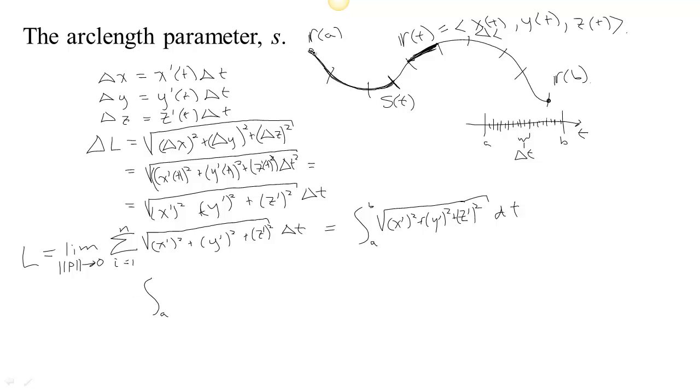Instead of integrating from the starting time all the way to the end, let's just sum up how much distance we've traveled from the starting time a until the current time, which could be some time between a and b. So we're just adding up just the first few bits here. So we're going to integrate from a to t in this thing.